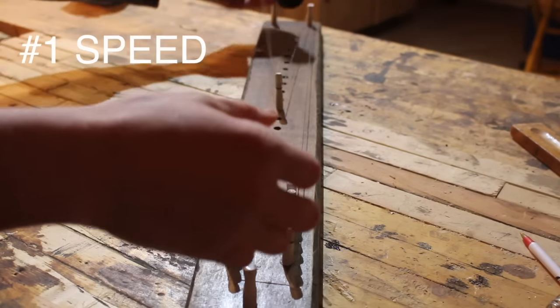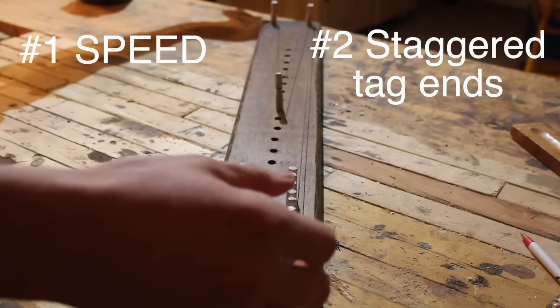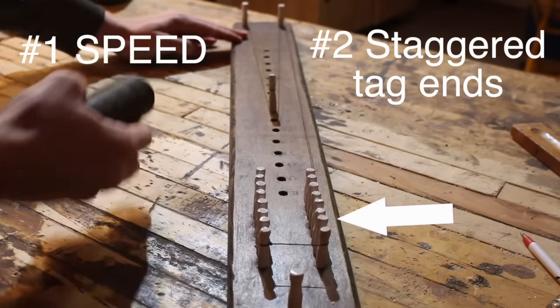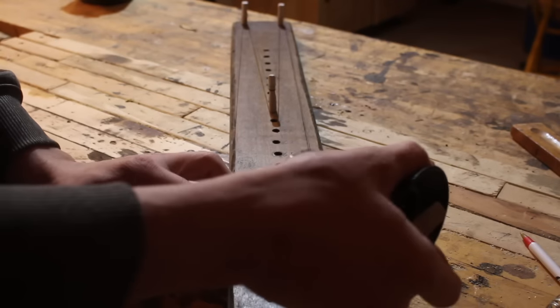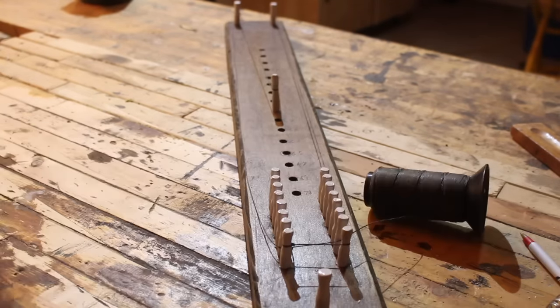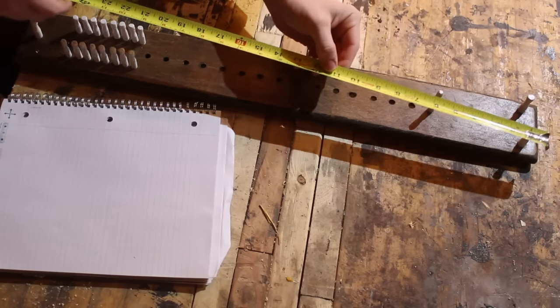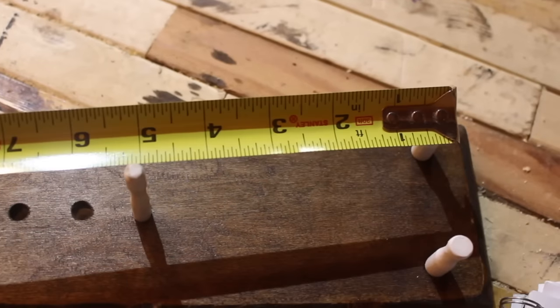The second reason we use a bowstring jig is so that all of our tag ends at the end are all staggered. That's what all those dowels real close together are there for. Now you can accomplish this without a bowstring jig but if you're going to make more than one bowstring I'd recommend making a bowstring jig.